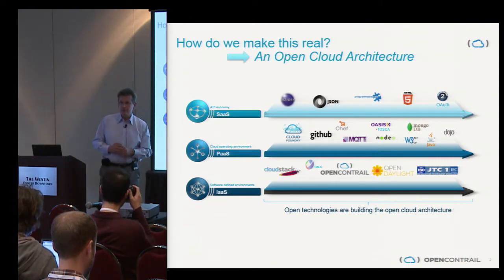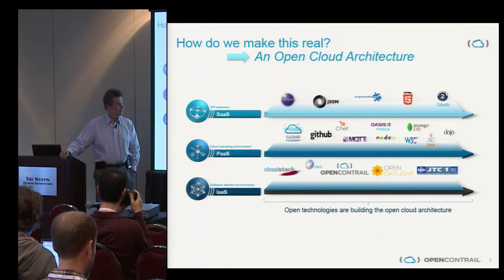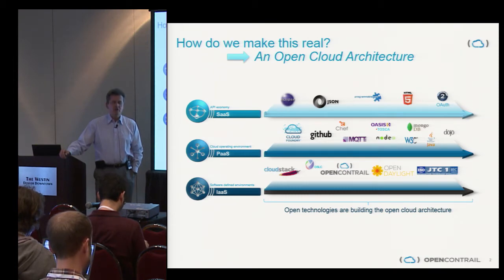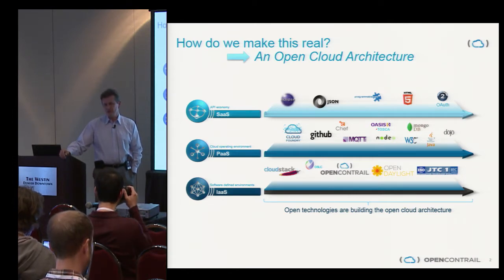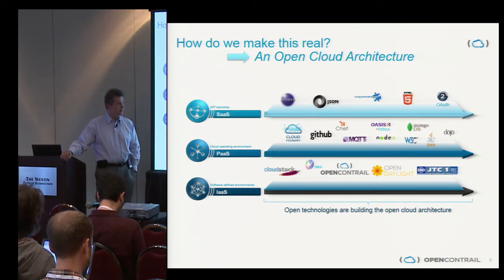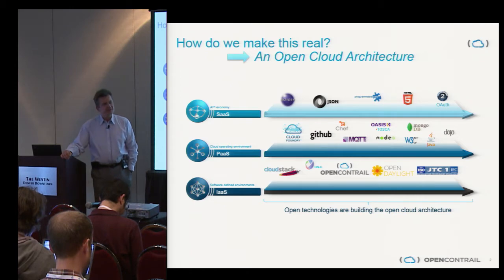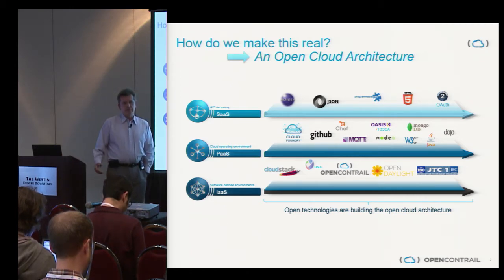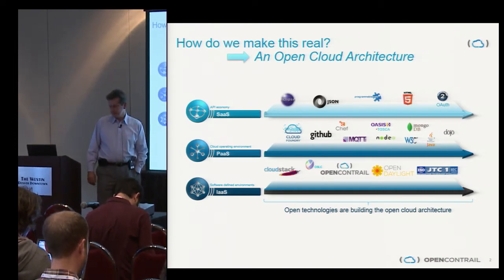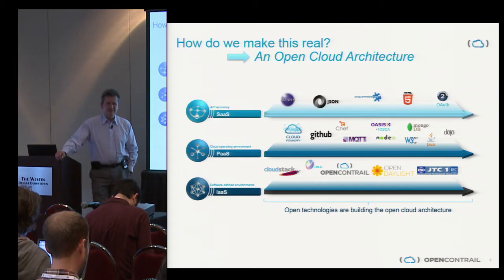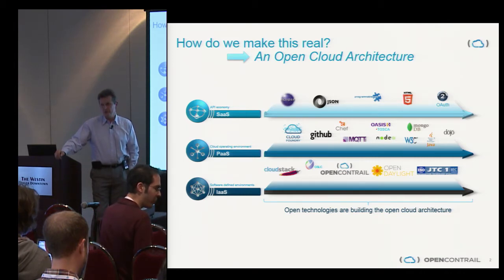On the open source side, we have been users of open source for a long time and every software product Juniper produces has multiple open source components included. This is new territory for us to start actively contributing to open source. It started last year with our release of OpenContrail as an open source SDN controller. We are also actively involved with OpenDaylight and provide contributions with CloudStack and OpenStack.